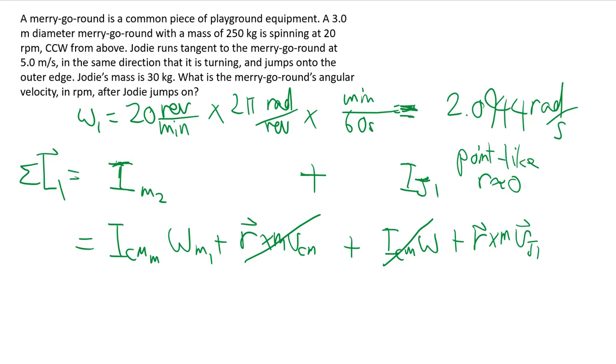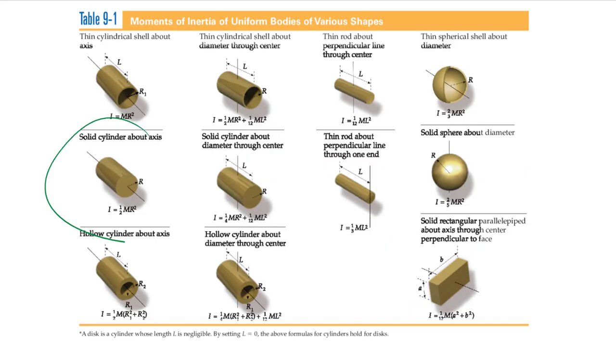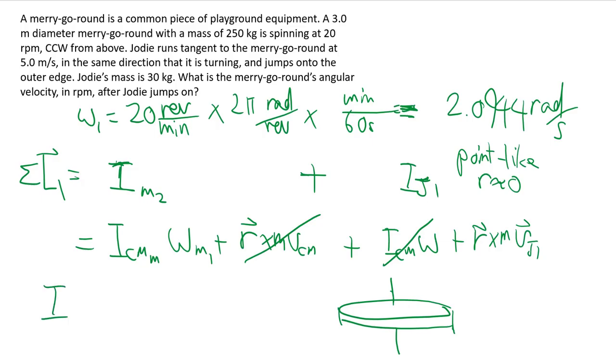For the merry-go-round, even though it's a very flat disk, it is still a solid cylinder, even though the height is very small. So we are still looking at a solid cylinder about its axis. It's just a very thin slice of such things. So it's still one-half m R squared, choosing the right shape and the right axis.